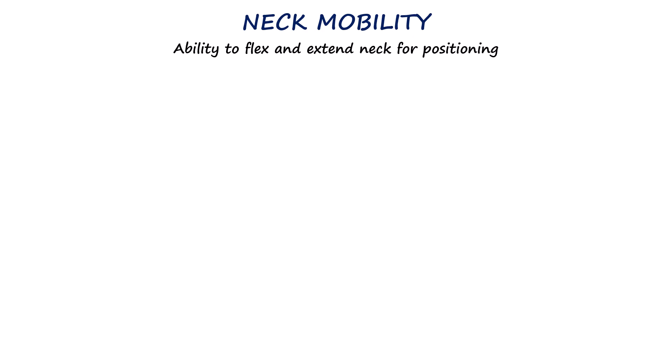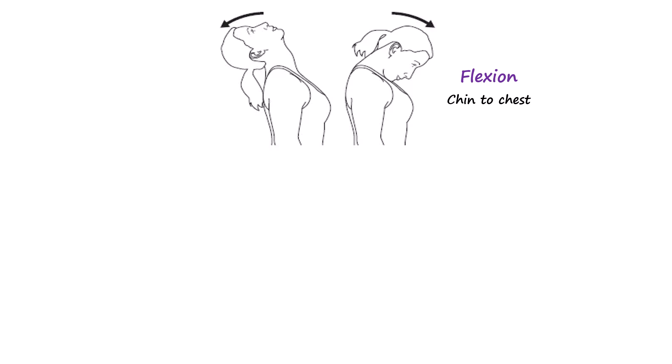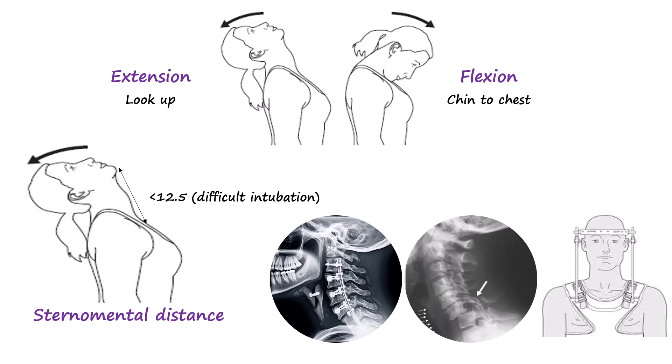N stands for neck mobility — how well a patient can move their neck, especially flexion and extension. These movements help line up the oral, pharyngeal, and laryngeal axes, which is essential for successful direct laryngoscopy. The sniffing position — achieved by flexing the neck forward and extending the head at the atlanto-occipital joint — helps align these axes for easier intubation. At the bedside, you can check neck mobility by asking the patient to flex the chin to the chest and then extend as far back as possible. The sternomental distance, measured from the chin tip to the top of the sternum with the neck fully extended, is another useful test; a measurement of less than 12.5 cm suggests limited mobility. Limited neck extension can result from cervical spine disease, previous spinal fusion, halo fixation, or trauma.